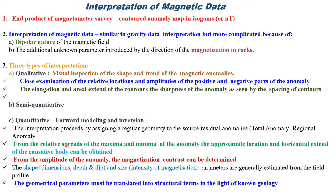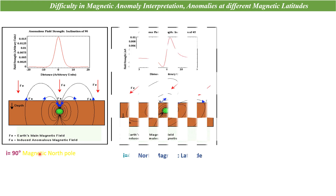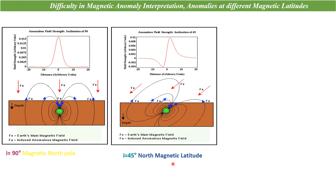The geometrical parameters obtained must be translated in the light of known geology — converting geophysical parameters to geology completes the work. Magnetic interpretation is difficult because the shape of the magnetic anomaly varies with latitude. At the magnetic north pole — inclination is 90 degrees — the main magnetic field is vertically downward, the induced anomalous field is in the same direction, so the amplitude is enhanced and we get a positive peak.